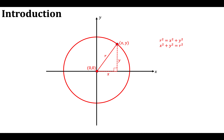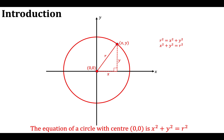Rearranging, x squared plus y squared equals R squared. That is the equation of a circle with centre at the origin (0, 0): x squared plus y squared equals R squared. This equation might seem new because you've not seen equations with both x squared and y squared before — we've only tended to see one or the other.